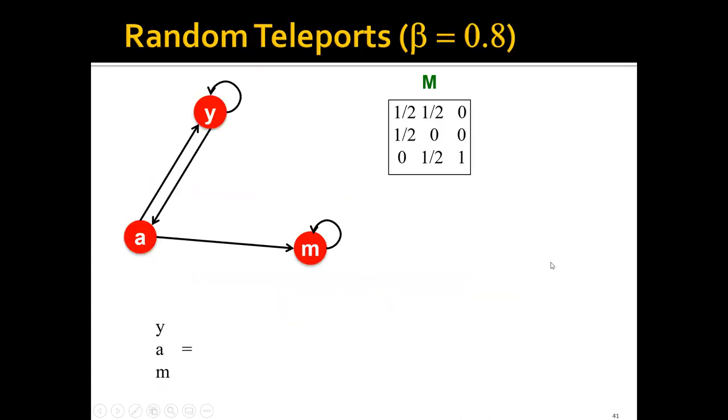Now let's take a look at an example and see how this new power iteration method works. Remember that this is our old graph where we have three nodes: y, a, and m. And this node m here is a spider trap. This is the old stochastic matrix M here, and let's say that we have set beta to 0.8.